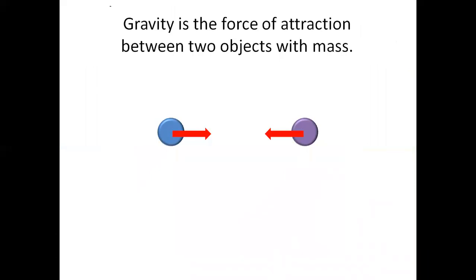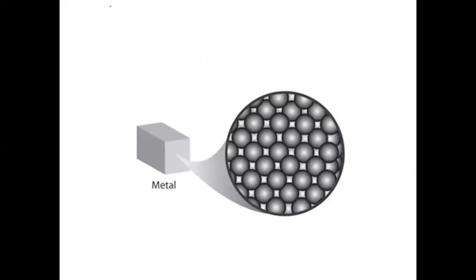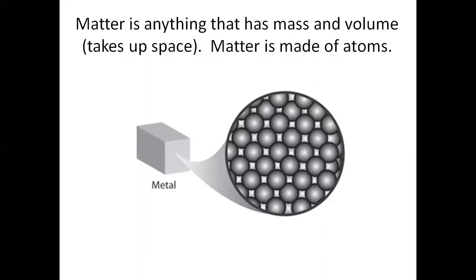Gravity is the force of attraction between two objects with mass. An object can also be called a body. It is something made of matter. Matter is anything that has mass and volume. It takes up space. Matter is made of atoms.